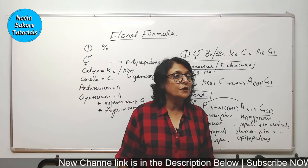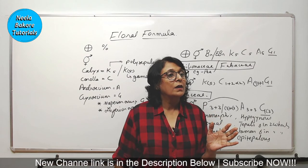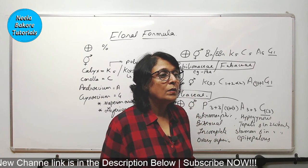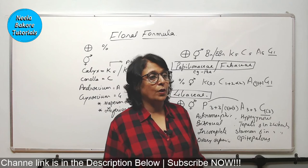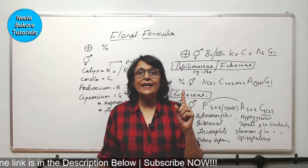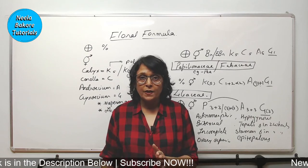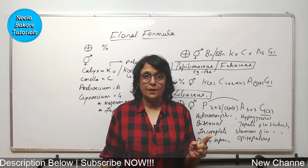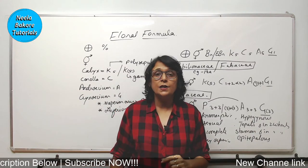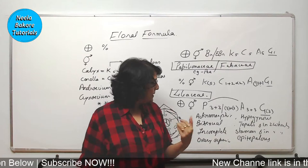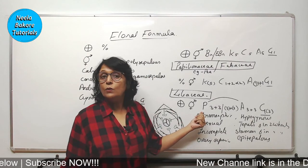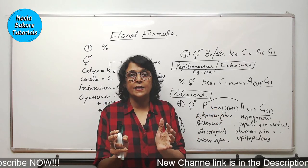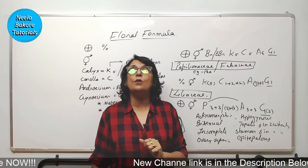Prathima asks about the difference between petal and tepal. A petal is the individual member of the corolla — the whorl is called corolla and the individual member is called petal. In some flowers, instead of petals and corolla and calyx, they have perianth, like what happens in lily. So there is no separate calyx and corolla — only perianth is there. The individual member of perianth is known as tepal.